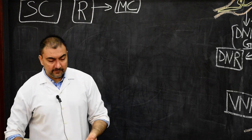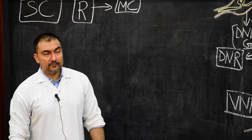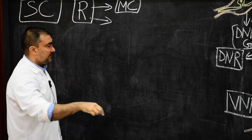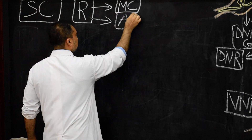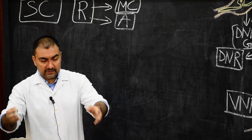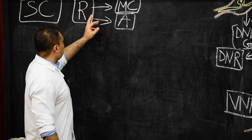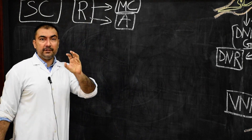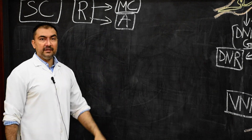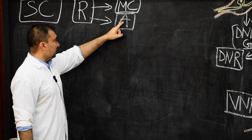When there is incomplete closure of the neural tube in the region of the brain, the brain remains exposed to the outside. Whenever there is a defect of neural tube closure in the region of the brain, it will lead to anencephaly. So, Rachischisis present in the cranial-most structure affecting the brain will lead to anencephaly.